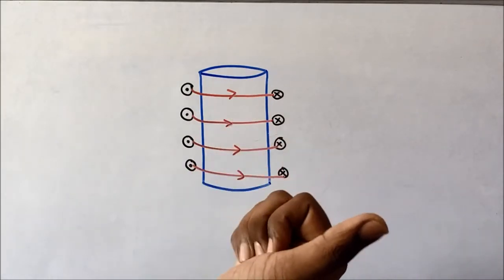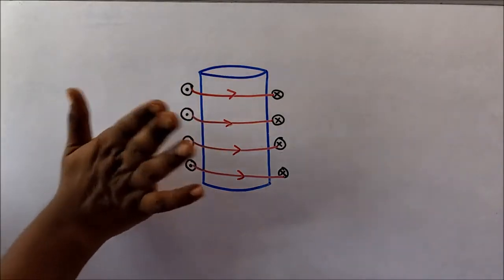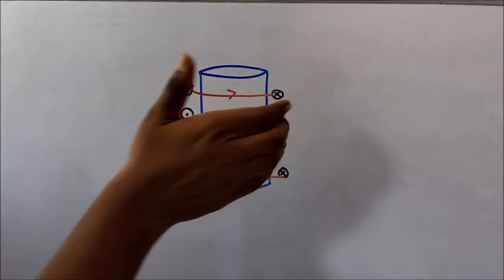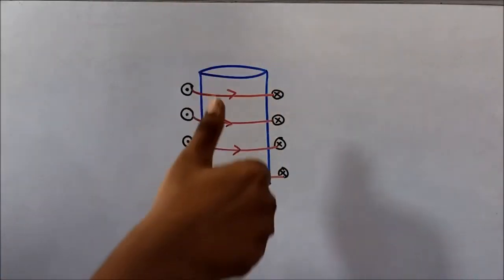In this type of question, just do the reverse. I mean to say that if circled fingers represent the direction of current, then the thumb will represent the direction of magnetic field.